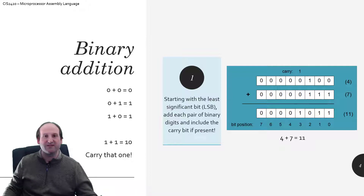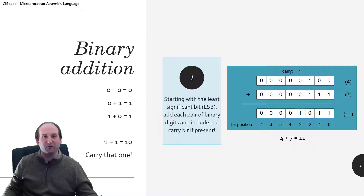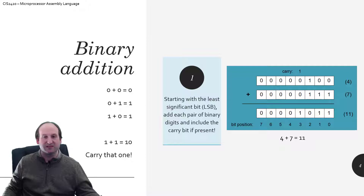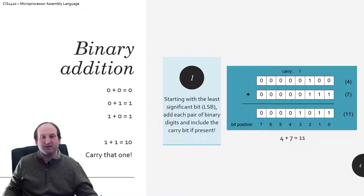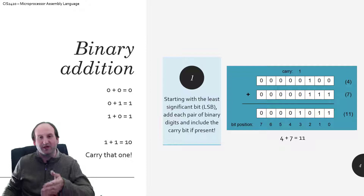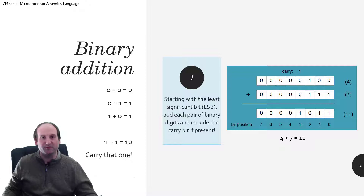Working through binary 4 plus binary 7 digit by digit: 0 plus 1 is 1 on bit 0; 0 plus 1 is 1 on bit 1; 1 plus 1 is 10, so the 0 goes down and 1 carries over, just like fourth-grade carry math; then 1 plus 0 plus 0 is 1; and everything else is 0. The only tricky case is when you have a carry plus 1 plus 1: that's 1 plus 1 plus 1 equals 3, which is binary 11 — the 1 goes down and the 1 also carries.